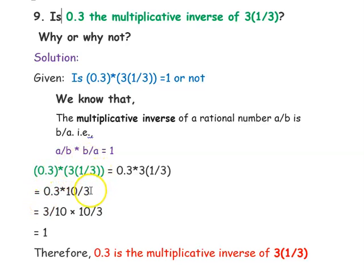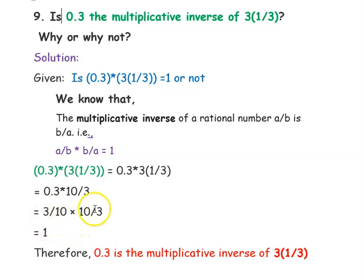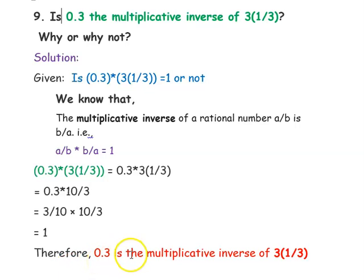3⅓ is a mixed number. We convert it to a fraction: (3 × 3) + 1 = 10, so 3⅓ = 10/3. Now we have 0.3 × 10/3. Writing 0.3 as a fraction gives 3/10. So we have 3/10 × 10/3 = (3 × 10) / (10 × 3) = 1. Therefore, we can clearly say that 0.3 is the multiplicative inverse of 3⅓.